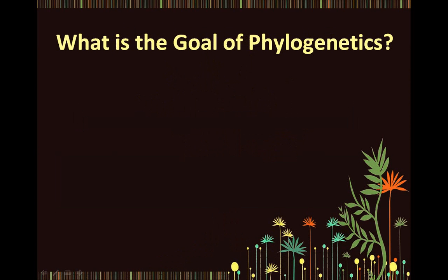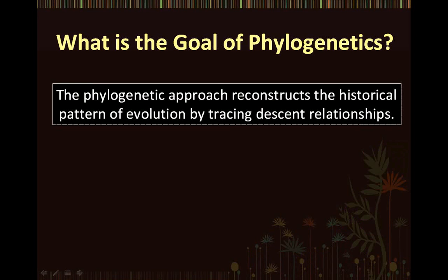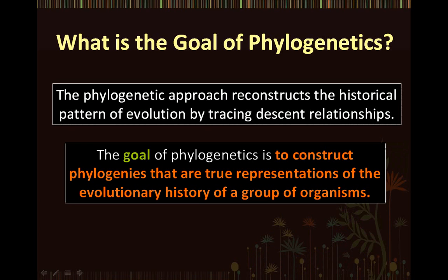What is the goal of phylogenetics? The phylogenetic approach reconstructs the historical pattern of evolution by tracing descent relationships. The goal of phylogenetics is to construct phylogenies that are true representations of the evolutionary history of a group of organisms.